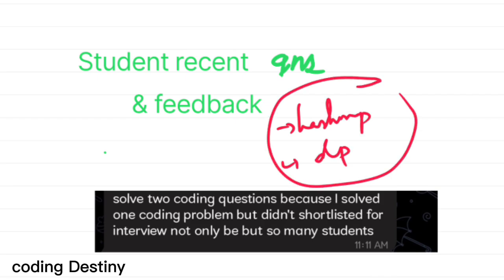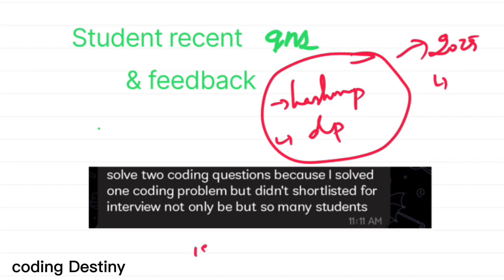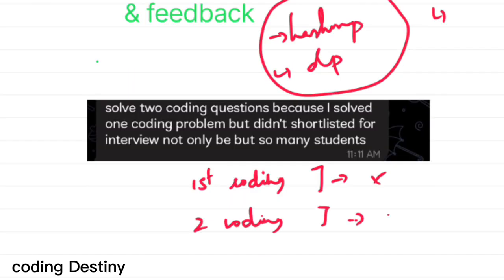Based on student feedback, some received coding questions from hash map and dynamic programming topics, which confirms that the difficulty level is higher than the previous batch. The 2025 batch usually received array and string-based coding questions at medium level. Importantly, students who solved only the first coding question did not receive any further mail. Only those who solved both coding questions received an interview mail from Capgemini. Keep this in mind and avoid mistakes in the assessment.